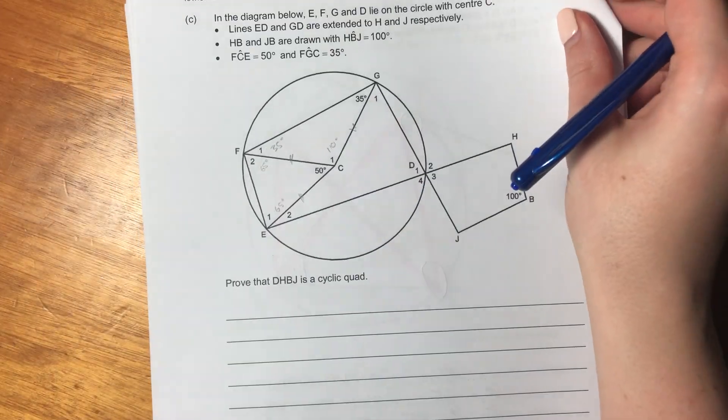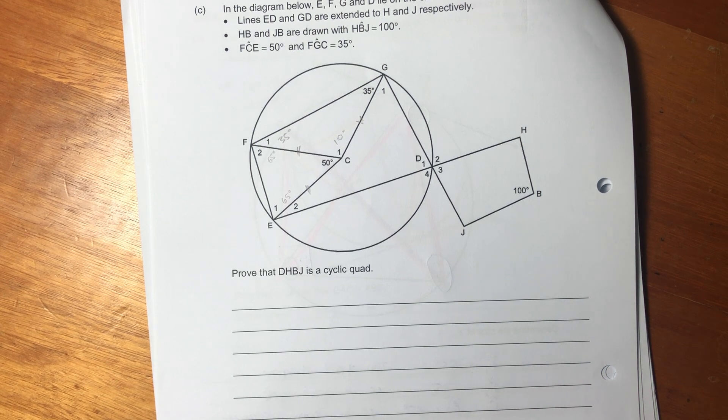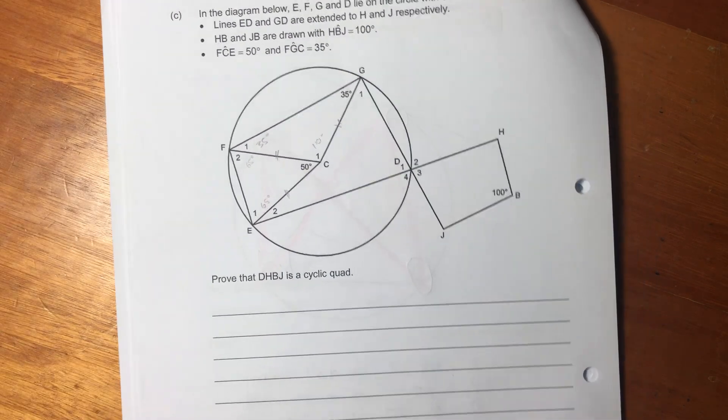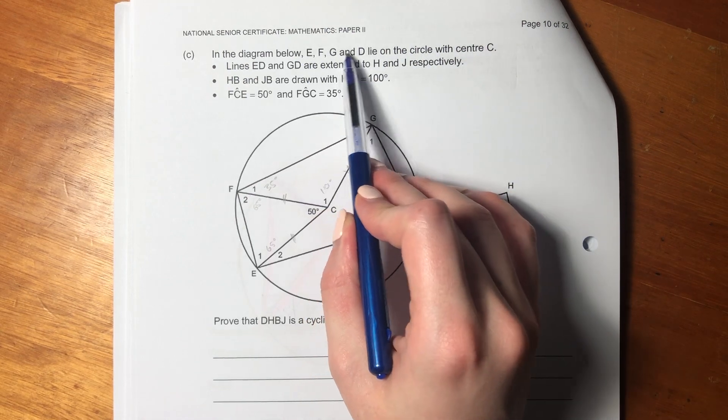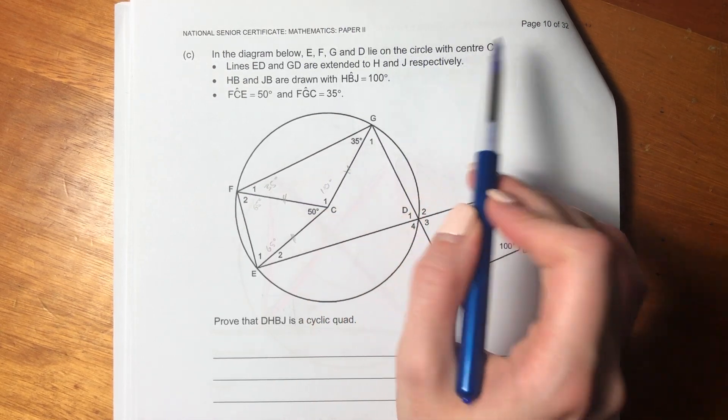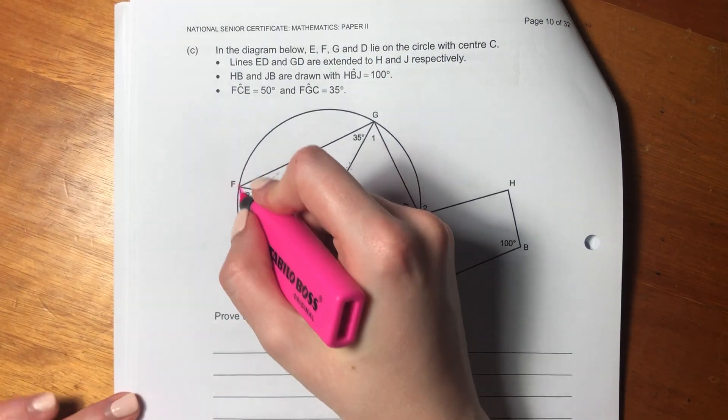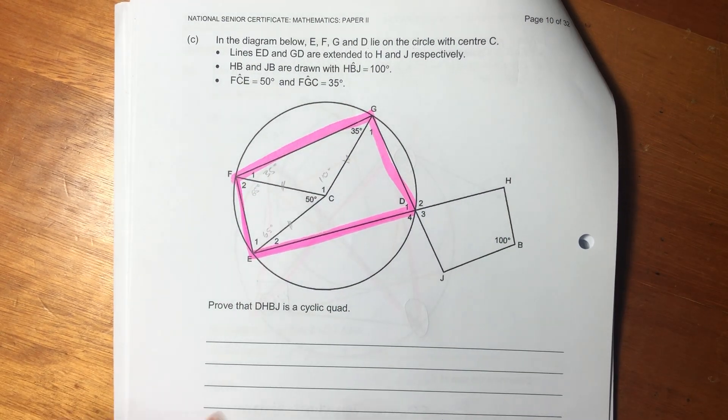So that's that question done. Let's now move on to the last question of this question. Now, questions like this, when people start seeing cyclic quads, they're like, oh, it's a bad time that's coming. No, it's not a bad time that's coming. We will figure it out. It says, in the diagram below, E, F, G, and D lie on the circle with center C. They're basically saying this is a cyclic quad. You should be recognizing these words.